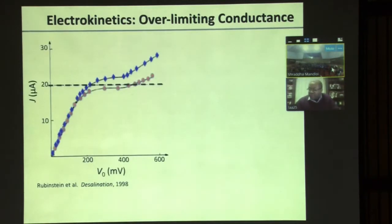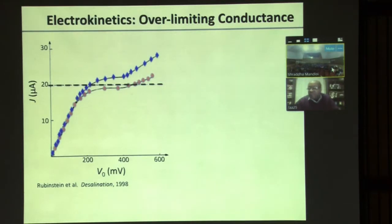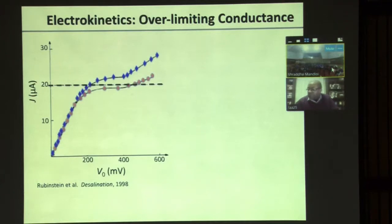We have experiments to check whether this is actually true, and the experiments tell a somewhat more interesting story. These are experiments done by Rubenstein and co-workers in 1998. They show that for driving forces V0 roughly about 20 to 40 times bigger than the thermal voltage—about 25 millivolts at room temperature—one does find an Ohm's law regime, and that regime does give way to a limiting regime as predicted. But curiously, when the system is driven to higher potentials, a new current develops, called the over-limiting current. This regime is called the over-limiting conducting regime—essentially a violation of what was predicted by the Nernst-Planck equations.